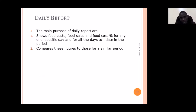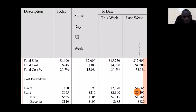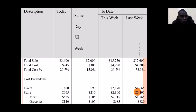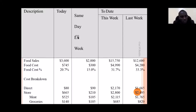After computing the daily food cost, you must give a report. This report will have the following components: food sales, food cost, food cost percent, and a breakdown of what caused the food cost — for example, a food cost of 20% would be explained by showing total direct issues and storeroom issues amounts.